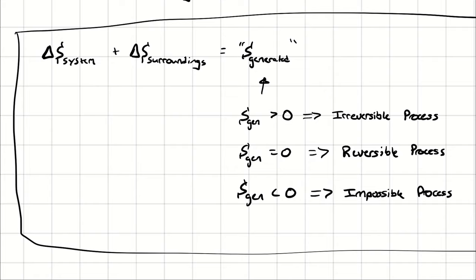If the entropy generated S_gen equals zero, that means no entropy was generated — you can get back to where you started, therefore it's a reversible process. If the entropy generated is less than zero, that means you are violating the second law of thermodynamics, therefore you have an impossible process.